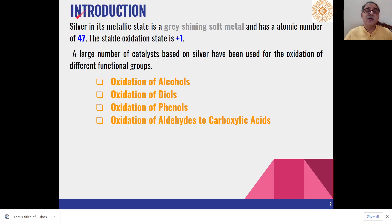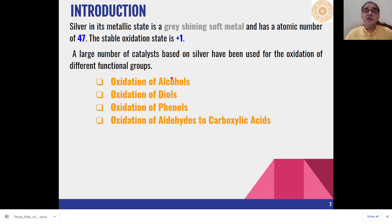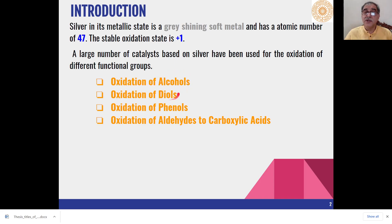As you know, silver in its metallic state is a gray shining soft metal with atomic number 47. In most of its reactions, the oxidation state of silver is plus 1. The main oxidation reactions which take place in different types of organic compounds are: oxidation of alcohols, diols, phenols, and oxidation of aldehydes to carboxylic acids. We will discuss these functional group transformations one by one.